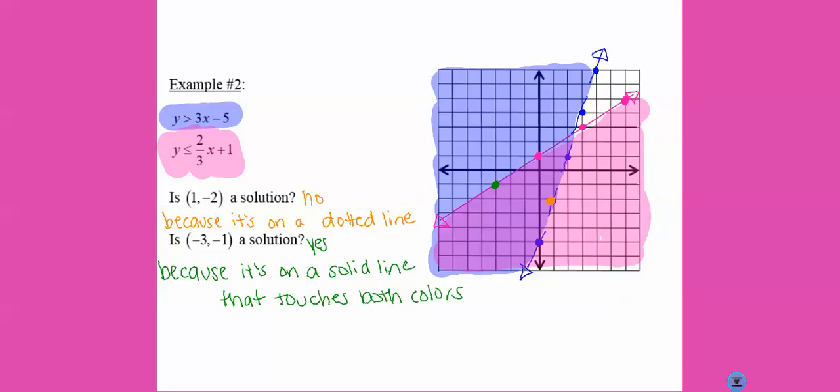So let's say we are looking at the point six, five up here. That is not a solution because even though it's on a solid line, it's not touching both colors. So we've got to be careful about the solid lines. If it's on a dotted line, it's automatically not a solution. If it's a solid line, you have to make sure it touches both colors.